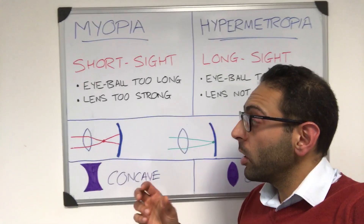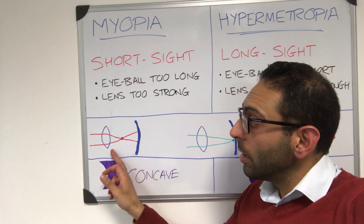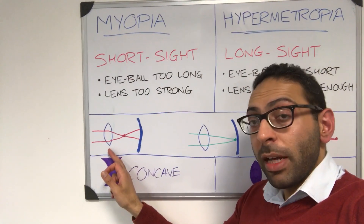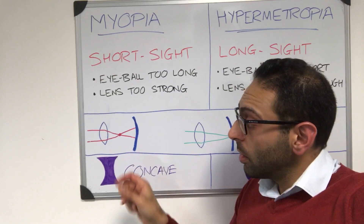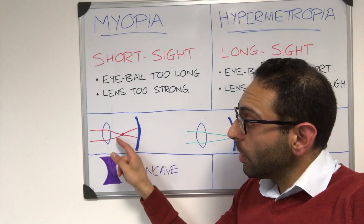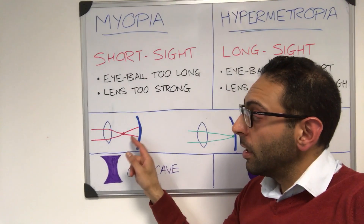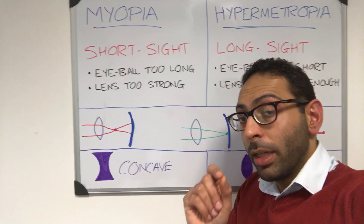In short-sightedness, or myopia, either the eyeball is too long or the strength of the lens is too much, so the focusing happens before the retina as opposed to at that endpoint — and that's where you get your blurred vision.